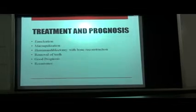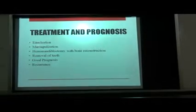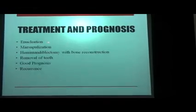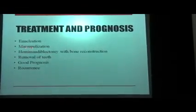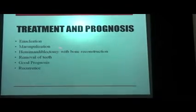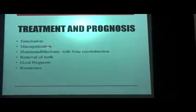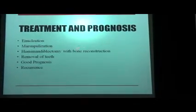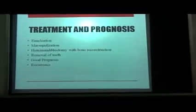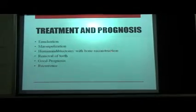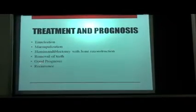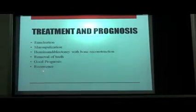Coming on to the treatment and prognosis of a cyst. Cysts are usually benign in nature, so they can be treated by two major ways: either enucleation in total — where we remove the whole cystic lining and capsule — or they can be marsupialized, which means the tooth is retained if associated with a tooth, and only a window is created to remove the lining of the cyst so as to cause less morbidity to the tissues. In certain cases of aggressive cysts such as odontogenic keratocyst, we can also do hemimandibulectomy with bone reconstruction. We should always remove the tooth associated with the cyst. Most cysts have good prognosis, except OKC which is said to have a high recurrence rate.